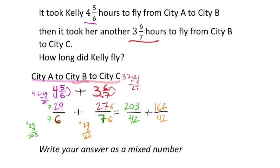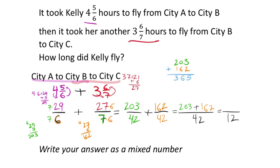Now that the denominators match at 42, we add the numerators: 203 plus 162. Three plus two is five, zero plus six is six, two plus one is three — giving 365. So we have 365 forty-seconds. Checking divisibility: 365 is not divisible by two or three, so it cannot be simplified. We still need to convert to a mixed number.